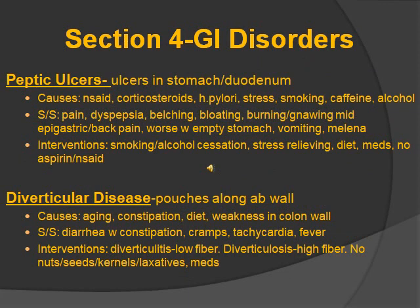Peptic ulcer disease — ulcers in the stomach or duodenum. Causes: NSAIDs (remember, NSAIDs cause ulcers), corticosteroids, H. pylori — a big one — stress, smoking, caffeine, and alcohol. Signs and symptoms: pain, belching, bloating, burning, gnawing — gastric or back pain worse with an empty stomach — vomiting and melena. Interventions: stop smoking and alcohol, relieve stress, fix diet, medications. Do not give aspirin or NSAIDs as they can cause ulcers.